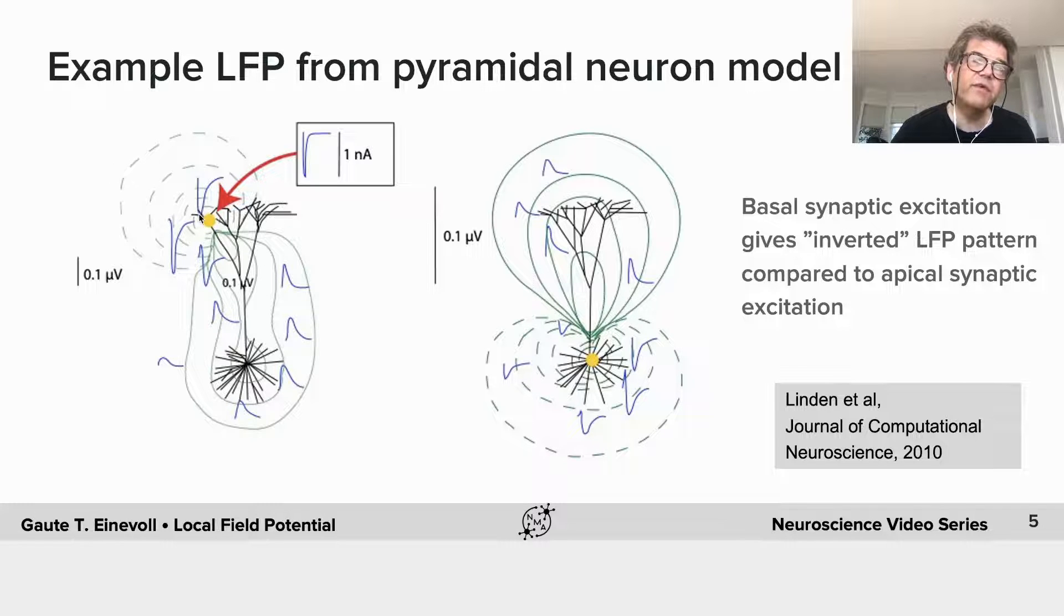then you get a negative, this is an excitatory current. So the current going into the neuron looks like this. This is for an excitatory synapse. Then close to the synapse, you get this negative shape, very close to the shape of this current.